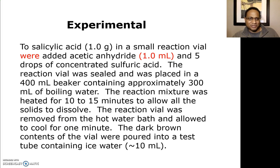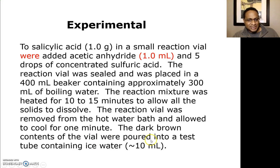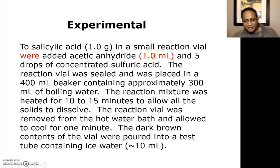Here's an example of an experimental. For salicylic acid, notice in parentheses you have the quantity used and the units in grams, and it's written in the past tense. For acetic anhydride, the volume of one mL is shown in parentheses, continuing through to where the dark brown contents of the vial were poured into a test tube containing ice water. This is a guide for writing your experimental in the past tense, with masses and volumes in parentheses.